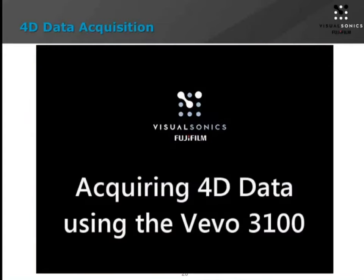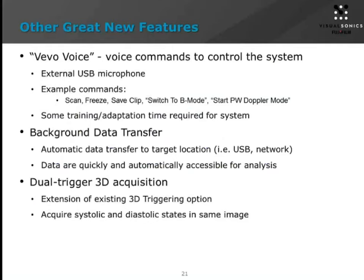Changing gears to some of the other new features — 4D is part of the second major software release for the 3100 platform, but there are other value-added features in this new release. One neat feature we've developed is what we're calling Vivo Voice — a voice command system to control the system. Example commands include scan, freeze, save clip, and switch to B mode. There is a little bit of training adaptation time required for the system to recognize patterns in your voice, but it is quite efficient, especially if you're doing any hand scanning where you're manually manipulating an animal with the transducer in the other hand. It really does help speed up throughput and gives you flexibility to quickly save images or switch to different modes while your hands are busy.